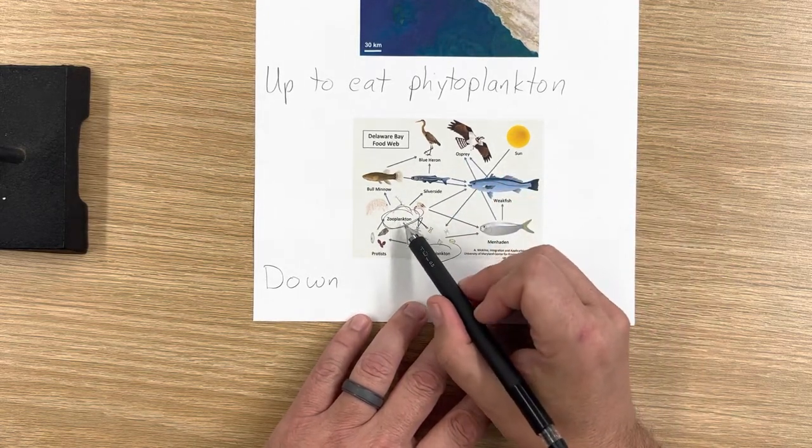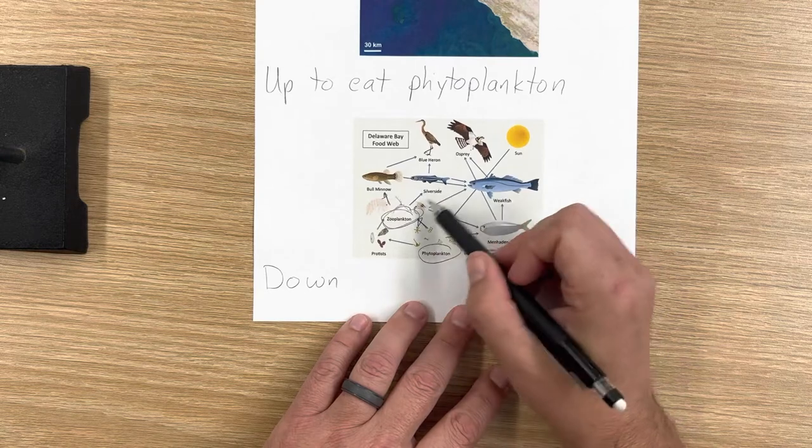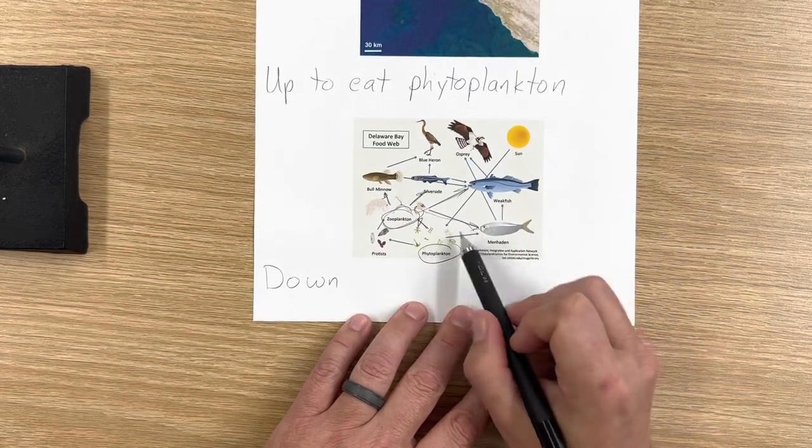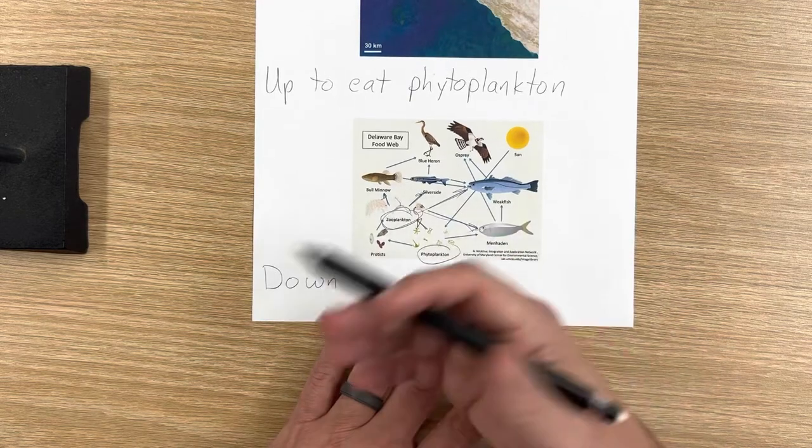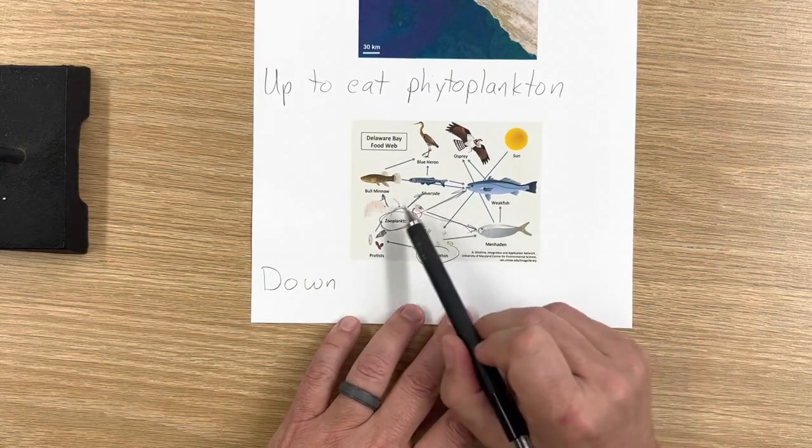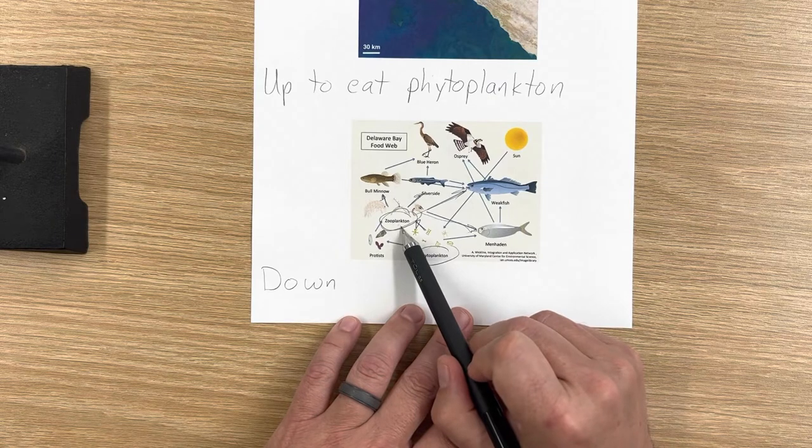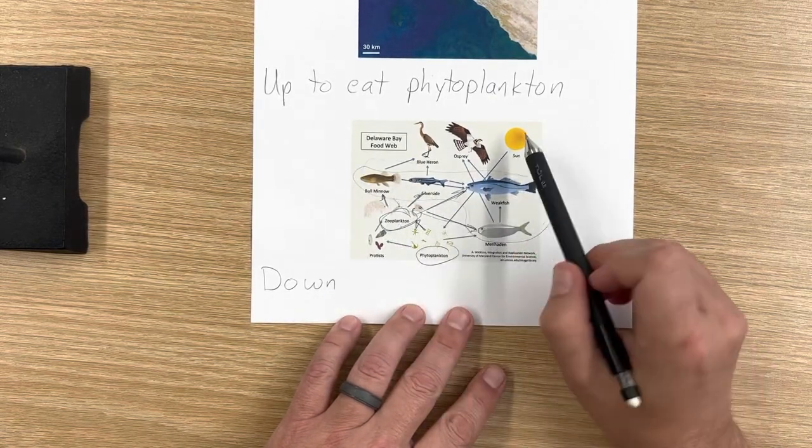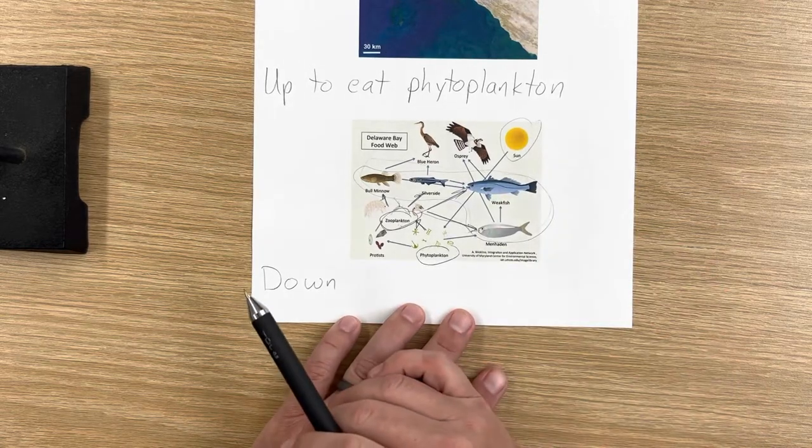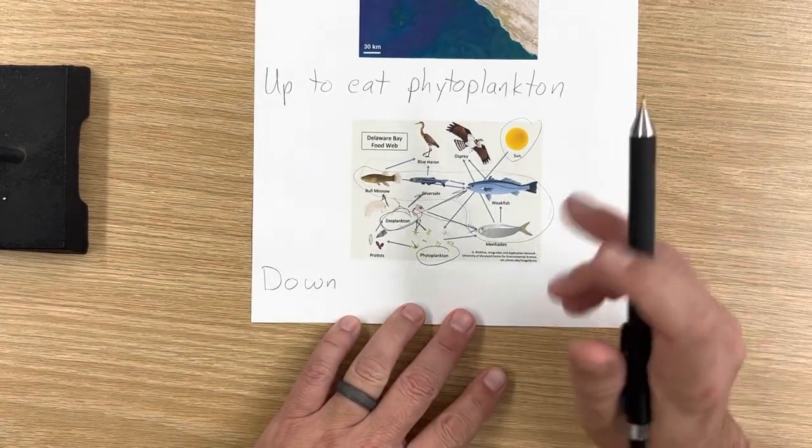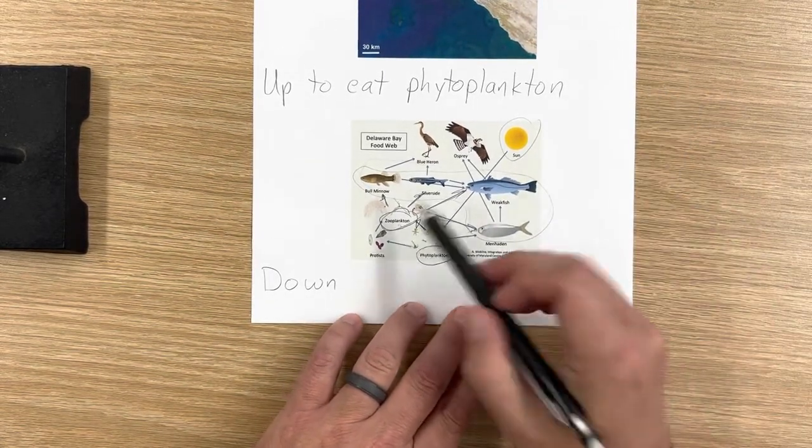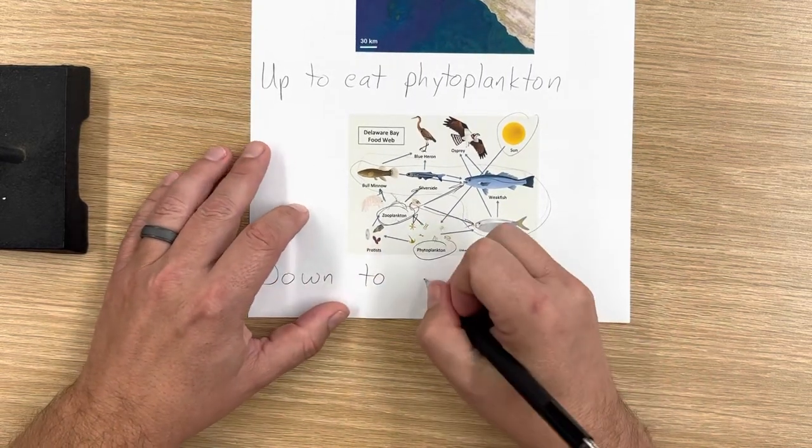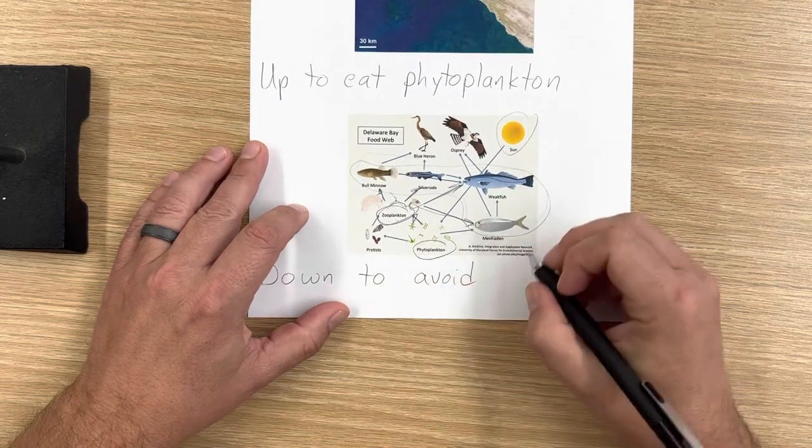But look at all the things that eat zooplankton. This bull minnow, silverside, this weak fish, this Manhattan, whatever that is. But there's all these little fish in the ocean that eat the zooplankton. So these are their predators. And these fish rely on sunlight, and they're up near the surface. And they'll eat any of those things that they can come across. So the zooplankton go down during the day to avoid predators.